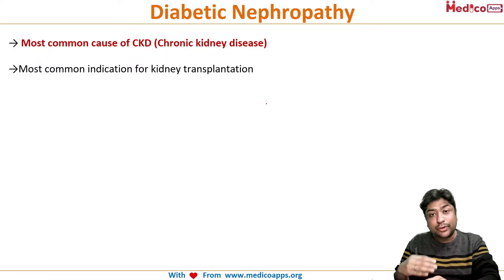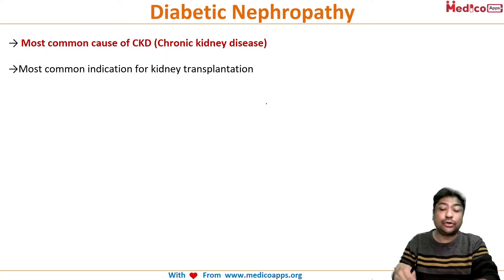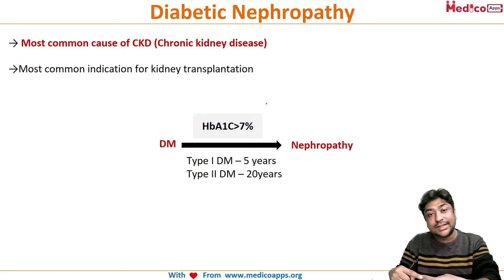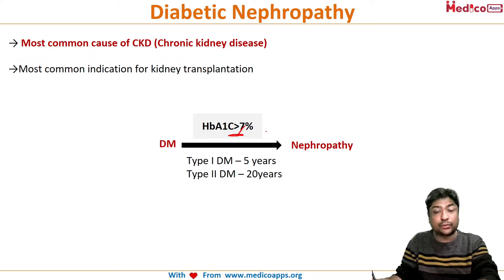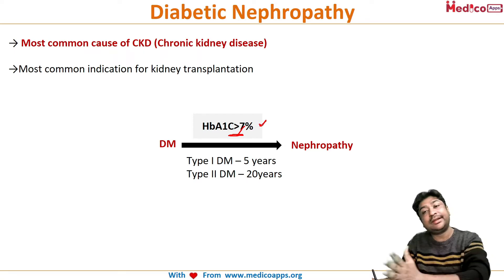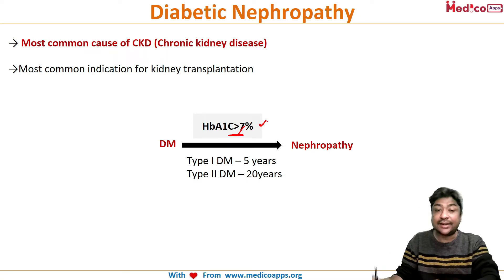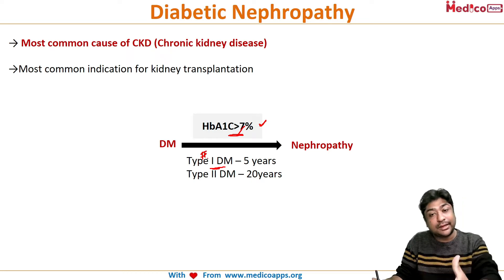Development of nephropathy in a diabetic patient depends on two factors: how good the glycemic control is, and what type of diabetes the patient has. If the HbA1c is more than 7, indicating poor control, development towards diabetic nephropathy will be faster. Type 1 diabetic patients are prone to develop diabetic nephropathy much faster than type 2 patients.